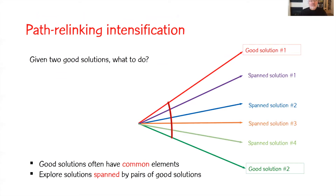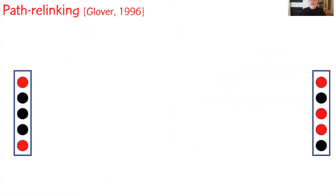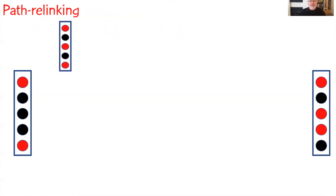Now, path-relinking: suppose you have two good solutions. Good solutions often have common elements. Path-relinking explores solutions spanned by pairs of good solutions. Here we have two good solutions, and there are four solutions spanned by those two. For a concrete example, suppose we have two solutions represented by red and black dots. From the solution on the left, we introduce an element present in the solution on the right but not on the left.